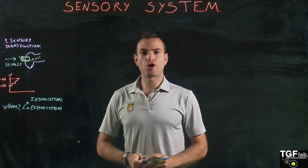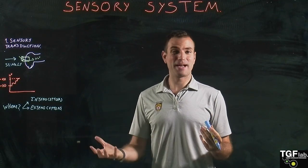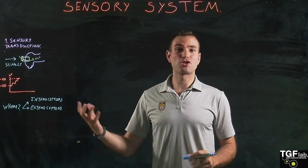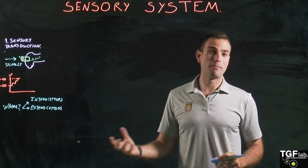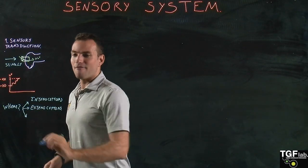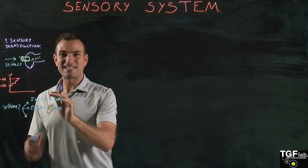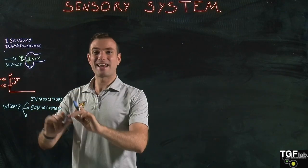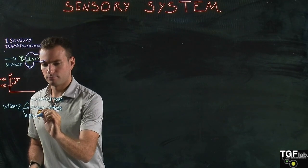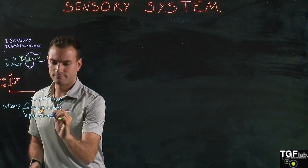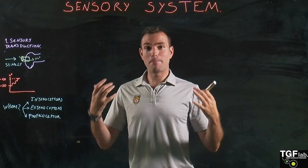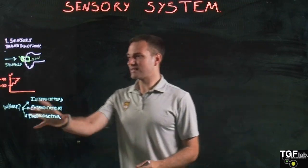Exteroceptors sense changes in mechanical tension — these are the mechanoreceptors we will look at more in depth shortly — as well as changes in temperature such as cold and warm, and also pain. Finally, there is another type of receptor that is intermediate between inside and outside of the body: the proprioceptor, which is in charge of balance and the position of our body.